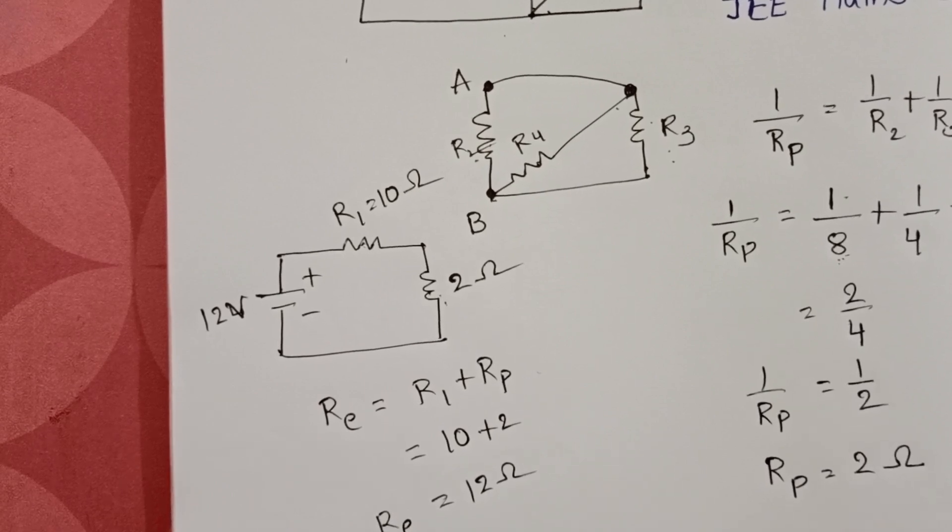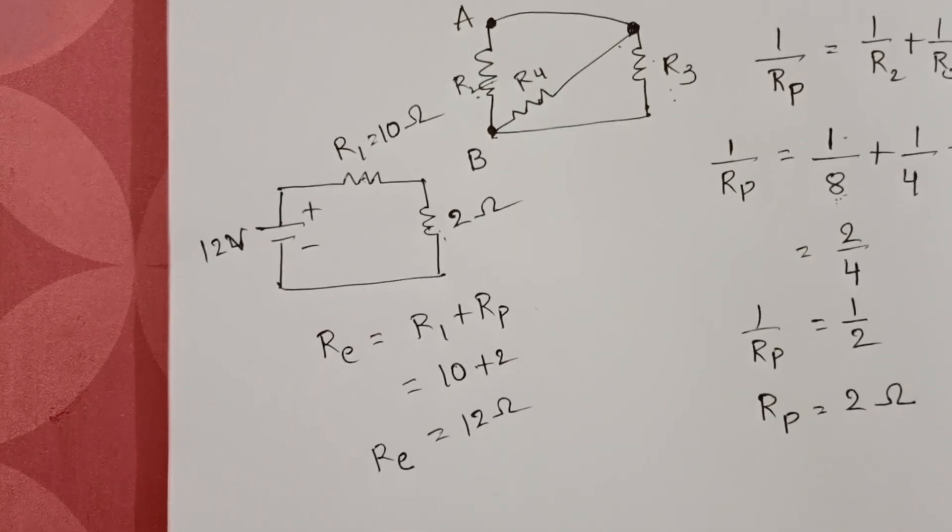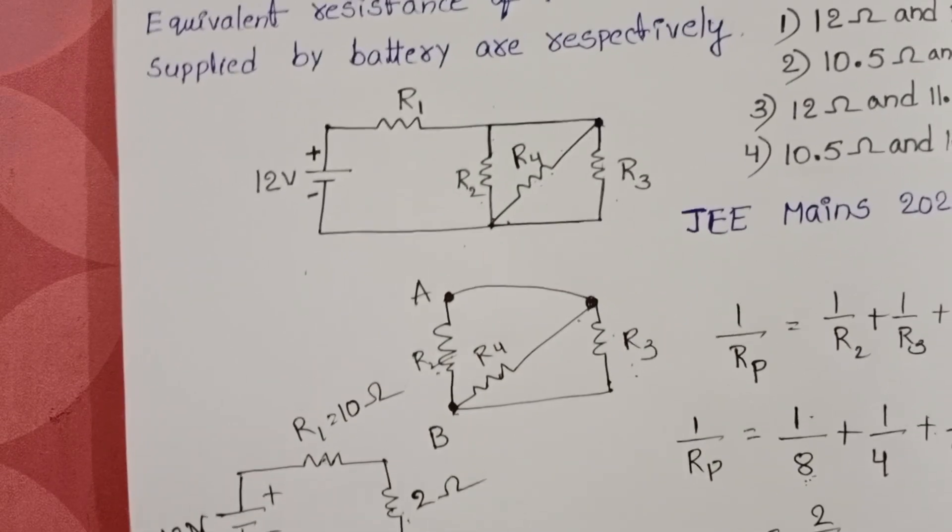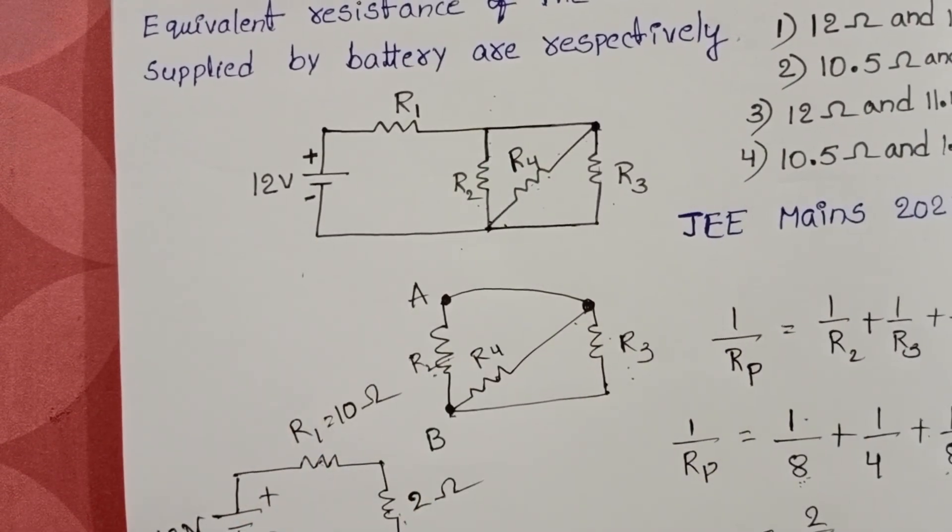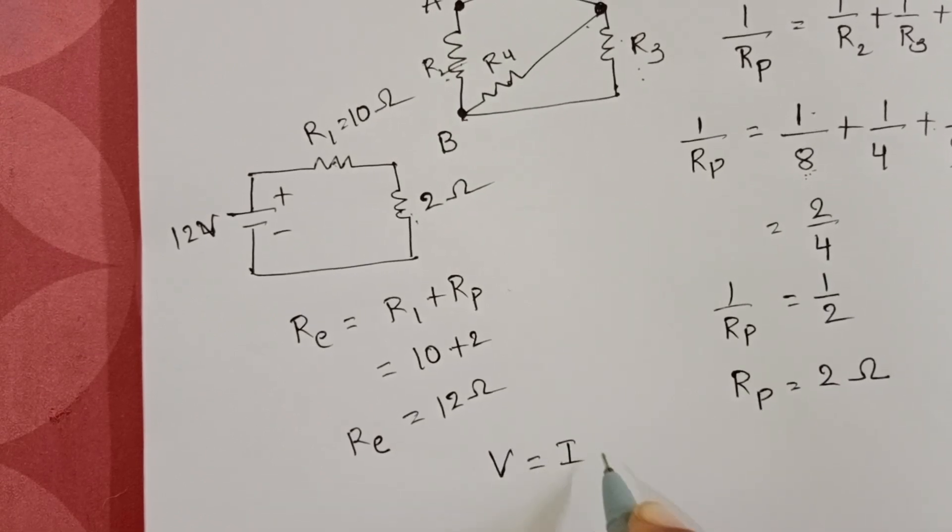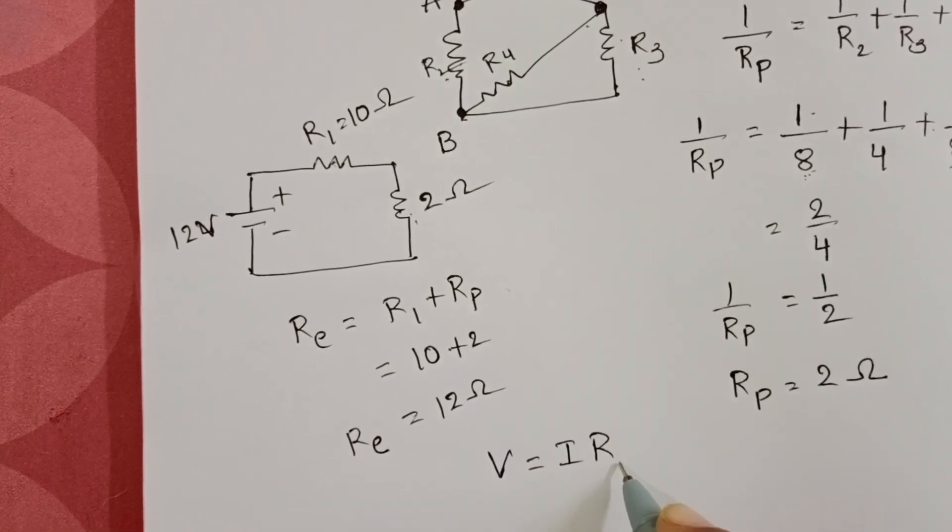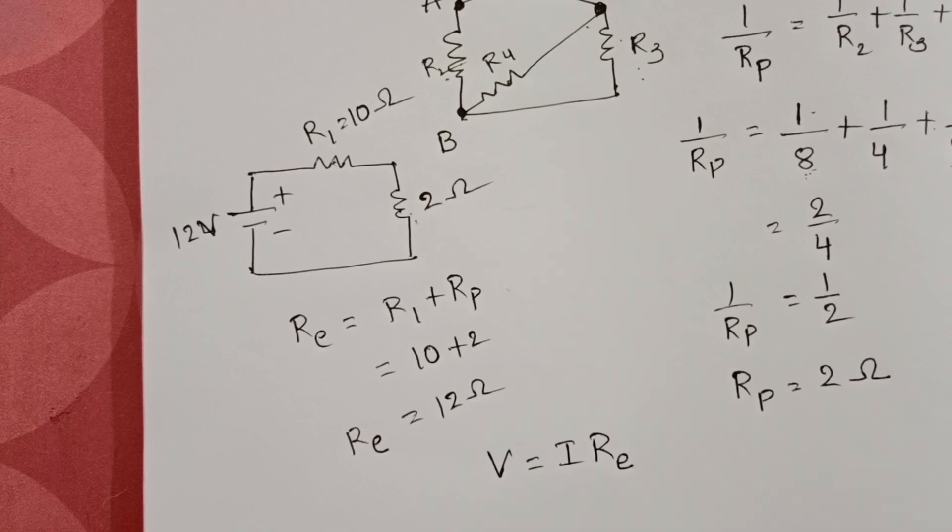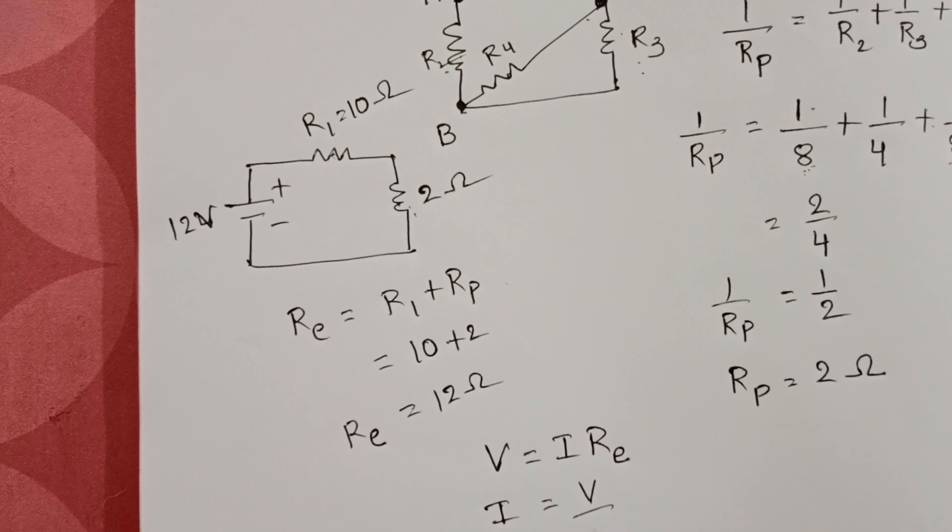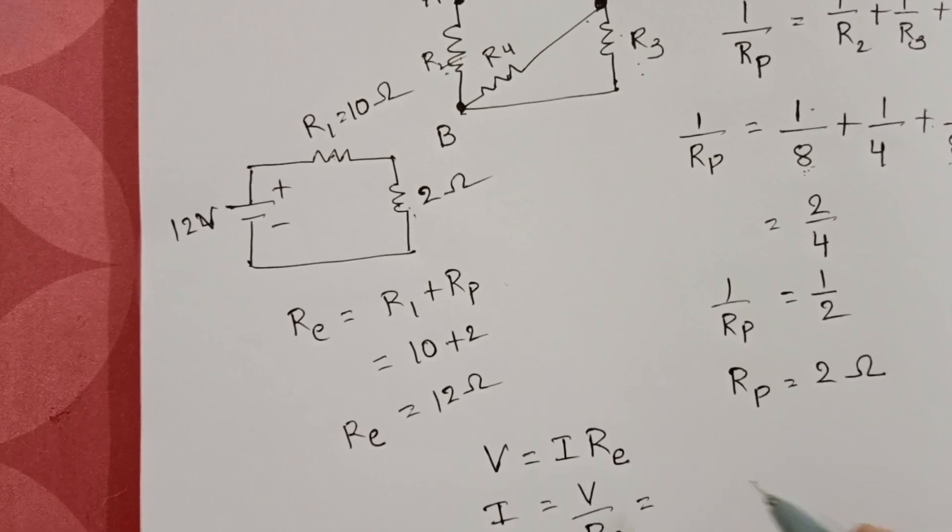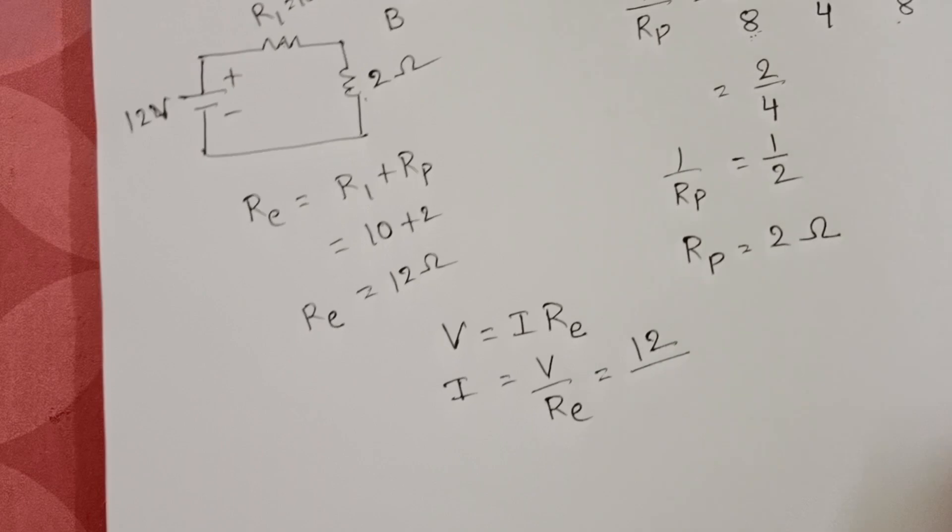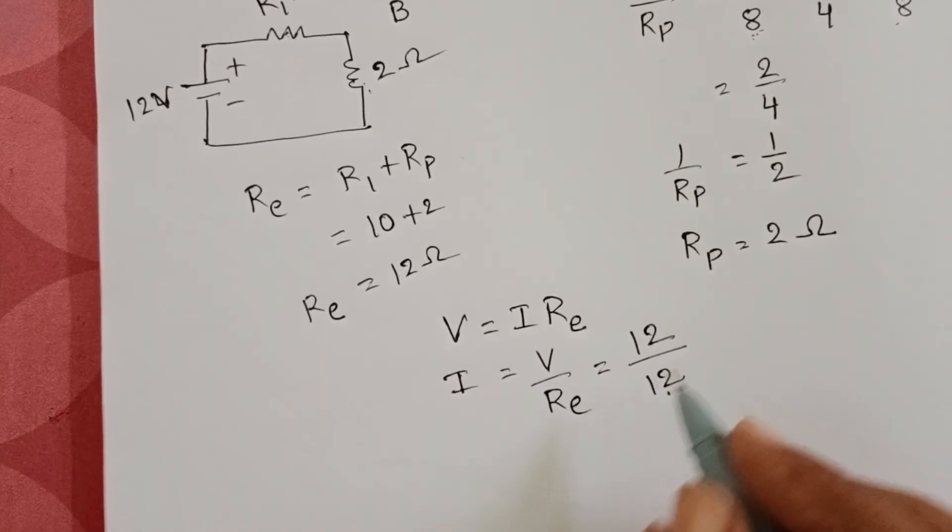First answer: equivalent resistance of the circuit equals 12 ohm. Now we have to find out the current supplied by the battery. Using Ohm's law, V equals I times R. Here R is the equivalent resistance of the circuit. Total current I equals V divided by R equivalent. Given V is 12 volts and equivalent resistance is 12 ohm, we get 12 divided by 12, which equals 1.